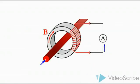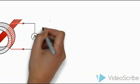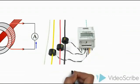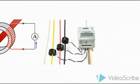On the primary side, we can measure 2500A, and on the secondary side it is 5A. So we can measure the current using a ratio of 2500A to 5A. This is a simple explanation of how the current transformer works.